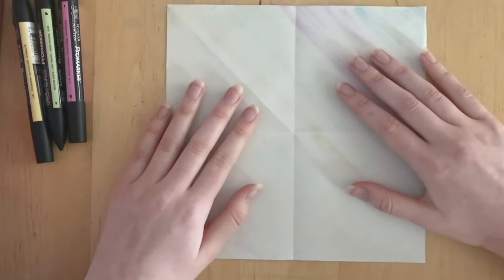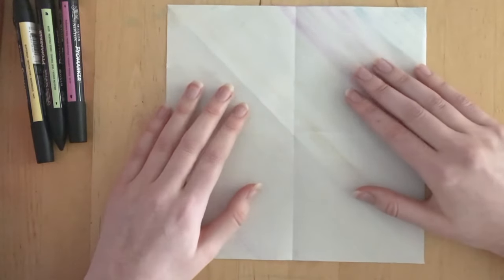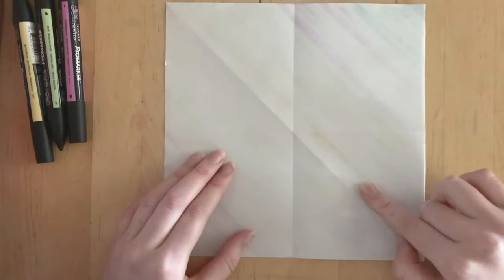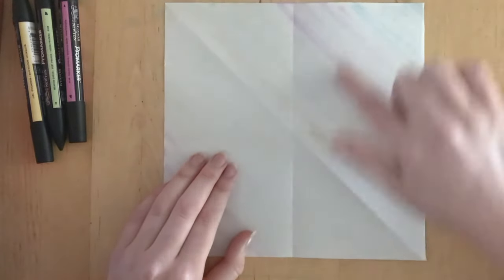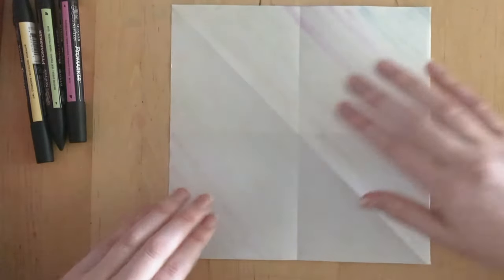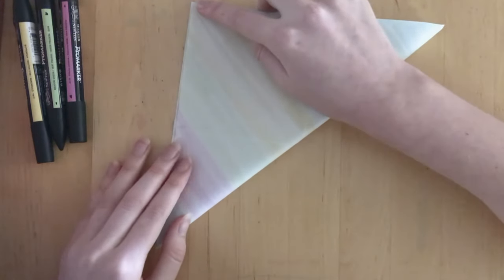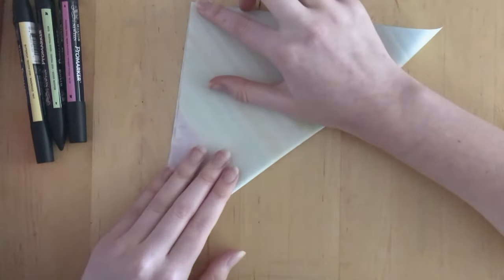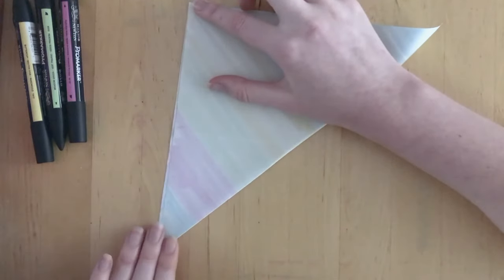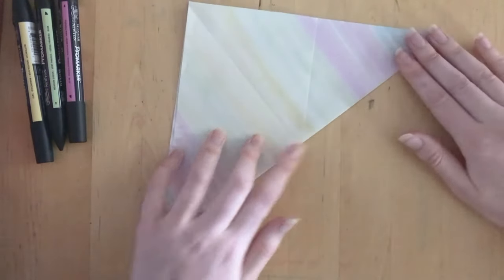So fold it both ways. Now make sure we've got the color on the back. We've got our four squares. We want eight triangles, so we're going to meet the corners together, fold it in half horizontally. Make sure those corners.